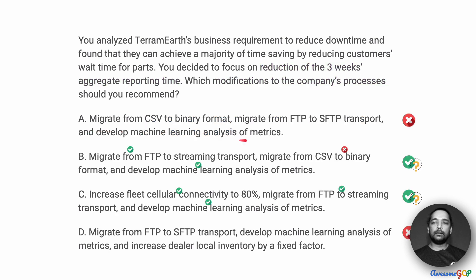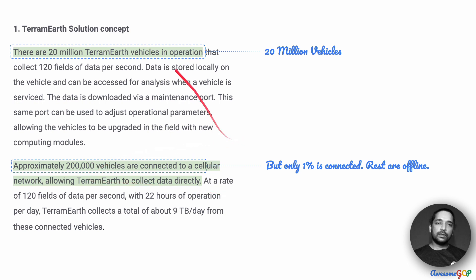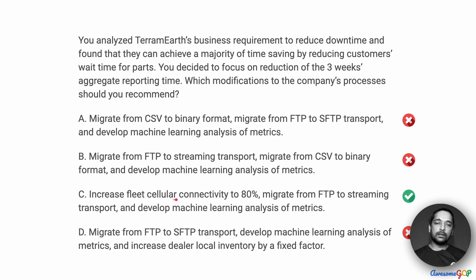Given that, we had a couple of options close to the right answer. Among them, migrating from CSV to binary didn't have a significant impact, whereas increasing the fleet cellular connectivity to 80% will have a significant impact. Looking at the case study itself, TerramEarth today has about 20 million vehicles in operation, but only about 200,000 vehicles are connected via the cellular network — that's only about 1% of the total. Therefore, the option to increase the cellular connectivity of the fleet to 80% is definitely our best option, and we go with option C.